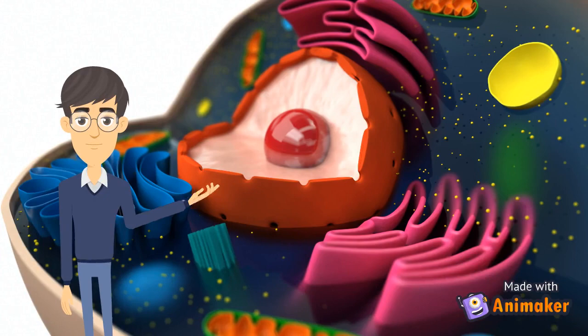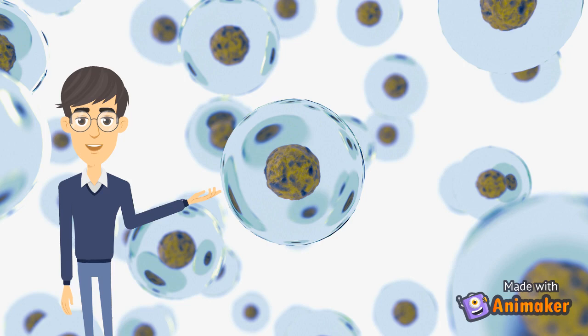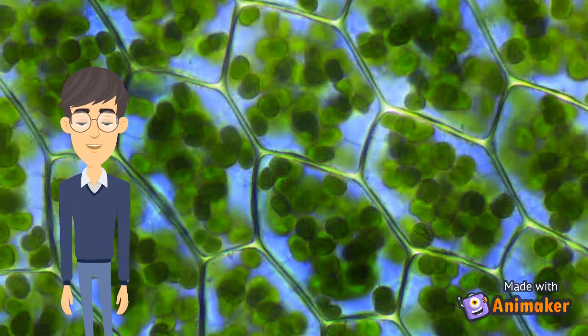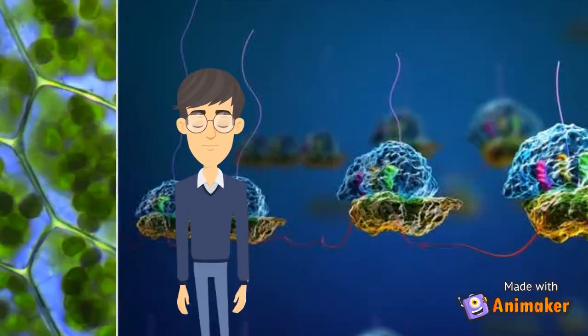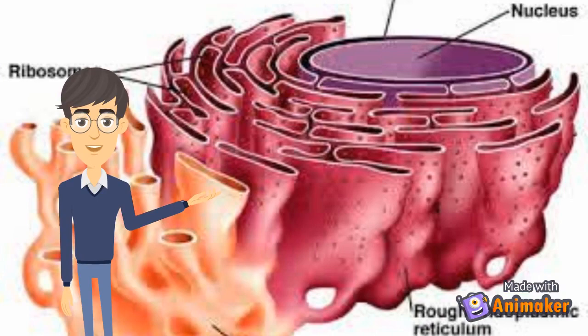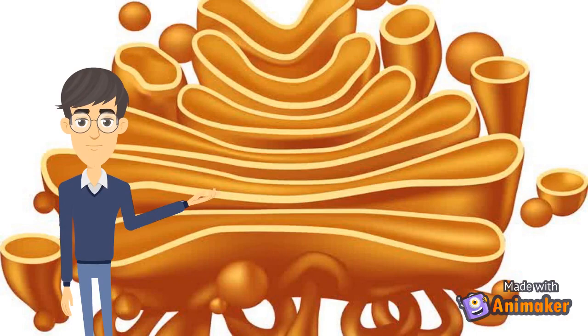The cell wall in plants acts as the barrier of the cell. The nucleus acts as the genetic palace of the cell. The cytoplasm acts as the pool area of the cell. The mitochondria acts as the energy system of the cell. The plastids act as the crayons in the plant cell. The ribosomes act as the protein factories of the cell. The endoplasmic reticulum acts as the network channels and factories of the cell.